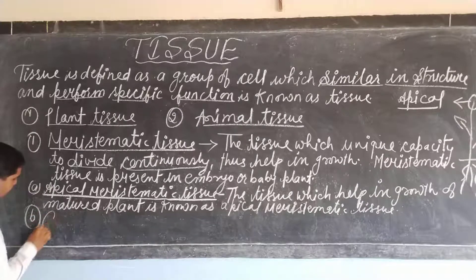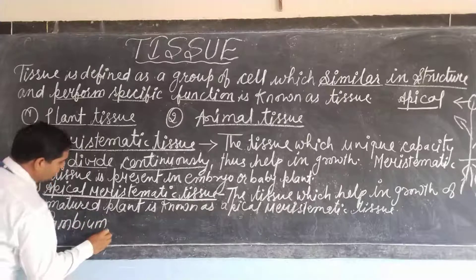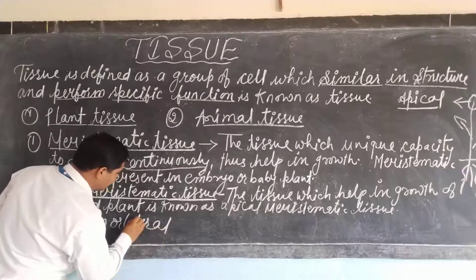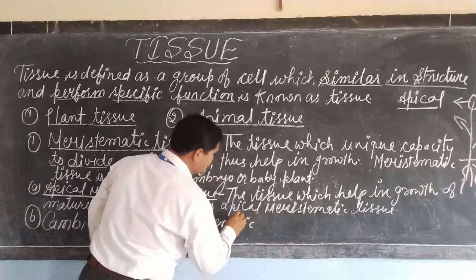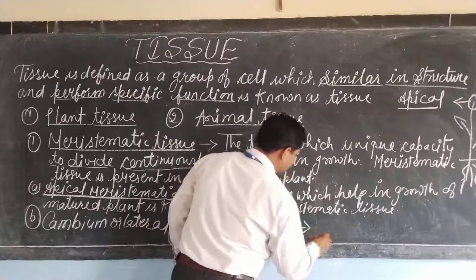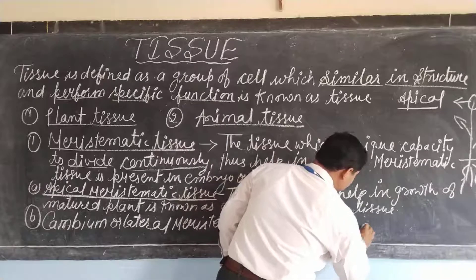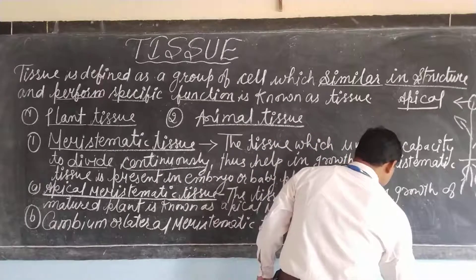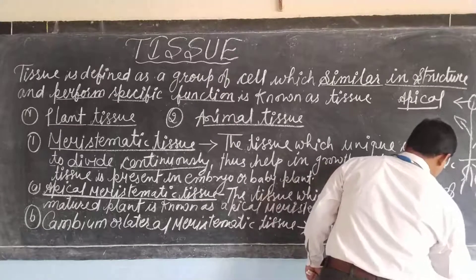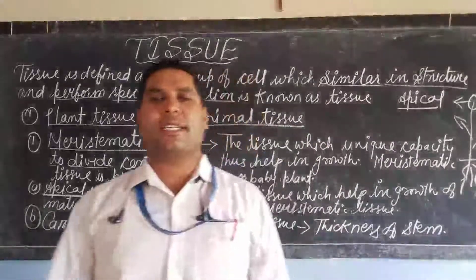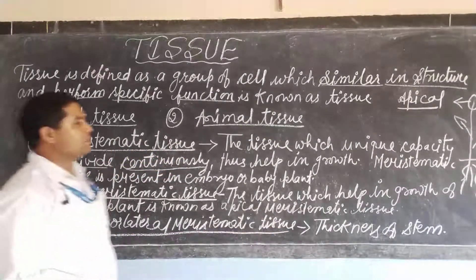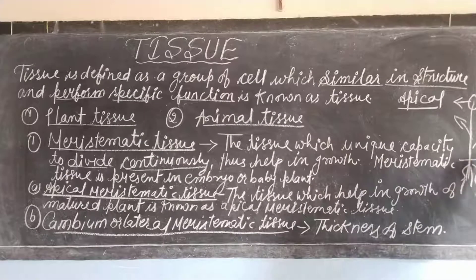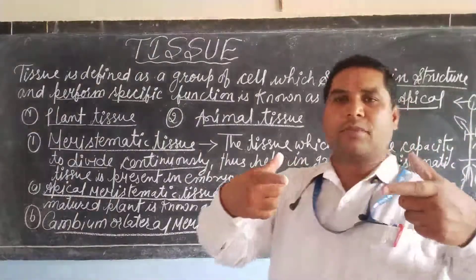Next is cambium or lateral meristematic tissue. The function of cambium or lateral meristematic tissue is to help the stem and branches to increase in diameter — the thickness of the stem and branches.